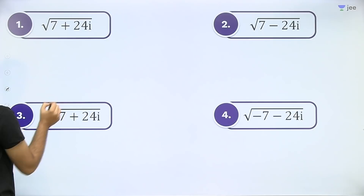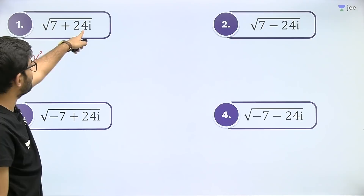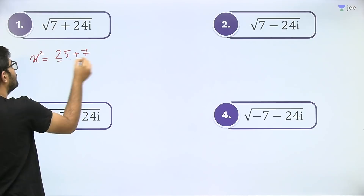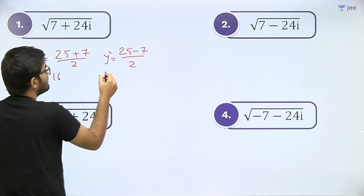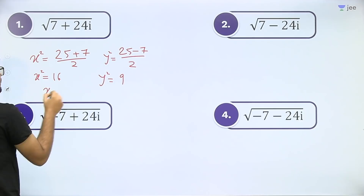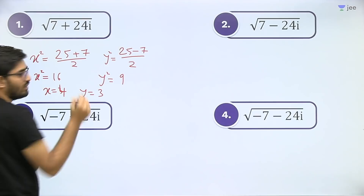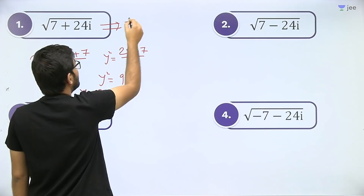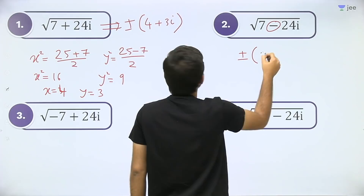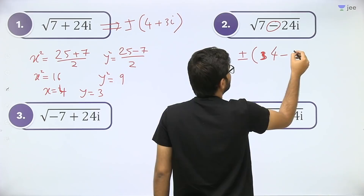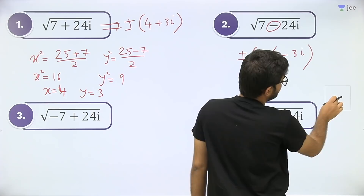One more example. Find x²: under root of 7² + 24² = 25. So x² = (25 + 7) / 2 = 16, and y² = (25 − 7) / 2 = 9. So x = 4 and y = 3. Sign in between is plus, so the answer is ±(4 + 3i). Similarly for the next question with minus in between, the answer is ±(4 − 3i).